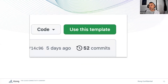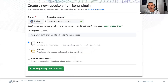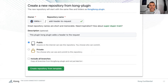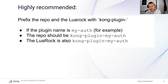You'll notice that instead of the usual clone button at the top, you have an unusual option: 'Use this template.' Pressing there gives you a dialogue where you can add a name and description, and you'll have your own version of the plugin using the template. One important note: in order for things to work correctly, we have to be careful about naming. The repo itself should be called kong-plugin followed by the name of the plugin. The same convention applies to the LuaRock.